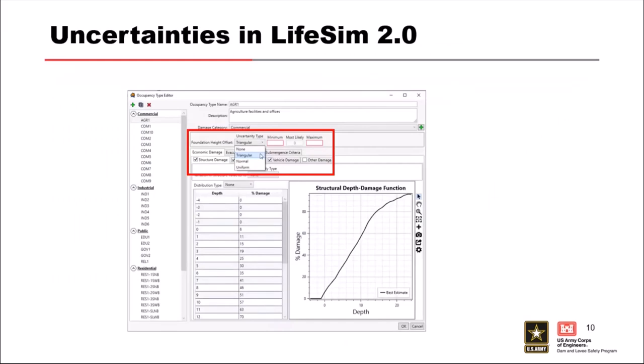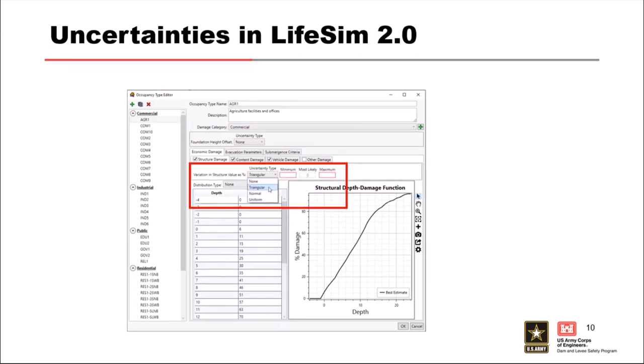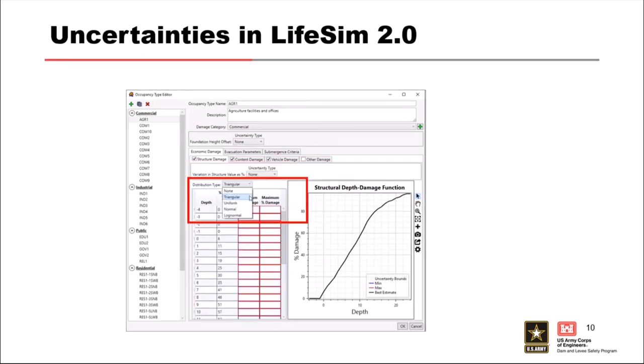Here's how LifeSim tries to incorporate measurable uncertainty. For foundation height, you can choose from different distributions — triangular distribution and normal distribution are the most common. If foundation heights in your area are usually 0 to 3 feet with a most likely value of 1.5, you can set that up easily. There's also uncertainty in the valuation of homes — again, triangular or normal distributions are available options.